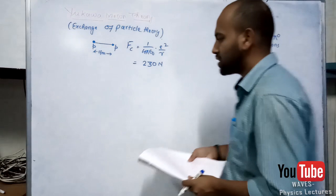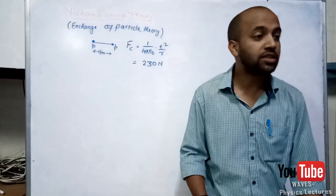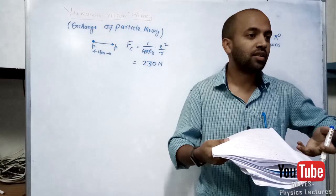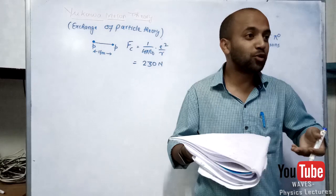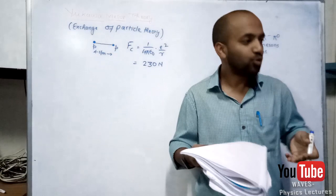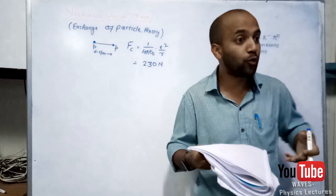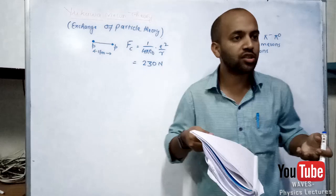Is 230 newton a large force? Practically, take a stone of 23 kg — the gravitational pull on it is about 230 newton. Think of those 20-litre water barrels — that's experiencing a force of around 200 newton, which is quite heavy. So 230 newton is not a small force. This is basically our large Coulomb repulsive force acting between the two protons.